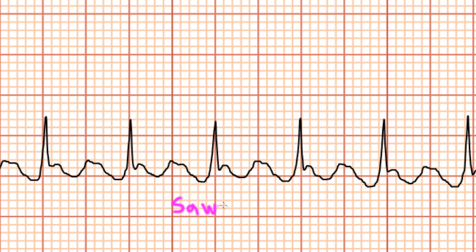This EKG is an example of atrial flutter. If you look closely, you can see these sawtooth flutter waves down here. And if you look even more closely, you'll notice that there's a flutter wave buried at the end of each QRS complex. That means that there's only one box separating each consecutive flutter wave, giving us an atrial rate of 300 beats per minute.